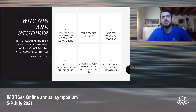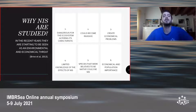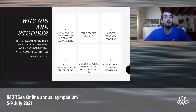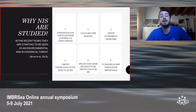Also, species that were believed to be native could actually be NIS. There was an example here in Italy of the Bryozoan Amathia verticillata, which was believed to be native in the Gulf of Naples for years and is now actually identified as alien — it is from the Caribbean.